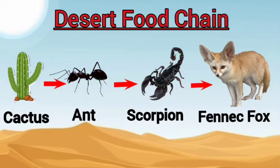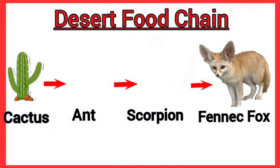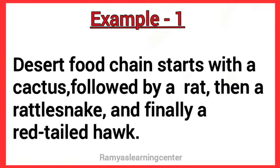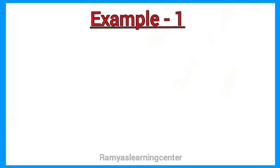Food chain of the desert. Example 1: The desert food chain starts with a cactus, followed by a rat, then a rattlesnake, and finally a red-tailed hawk.